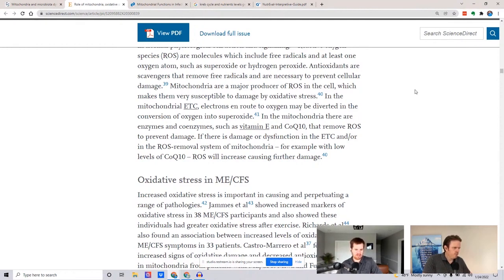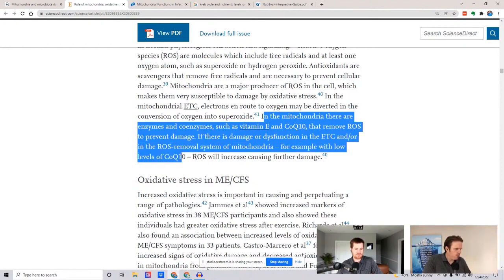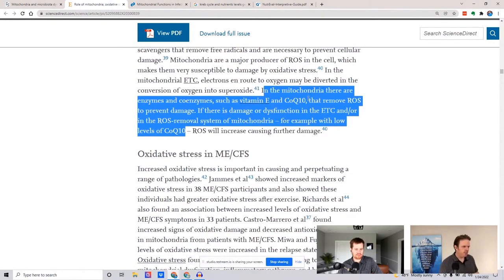I don't think it's in that paper. It does mention CoQ10 there. Right here in the mitochondria, there are enzymes and coenzymes such as vitamin E, CoQ10, to remove ROS, reactive oxygen species, to prevent DNA damage. These are really powerful things that we can add in. With low CoQ10, they'll see increase in damage. So CoQ10, PQQ, pyrroloquinoline quinone, vitamin E—we try to give CoQ10 with vitamin E together for that same reason, to prevent oxidative stress while fueling the mitochondria.